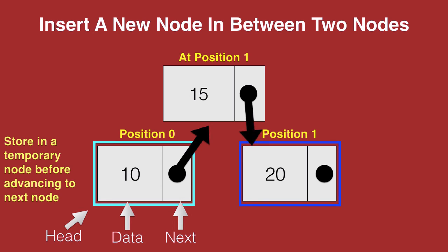So their positions now change. The node with data 15 becomes the node at position 1, and the node with data 20 becomes the node at position 2.